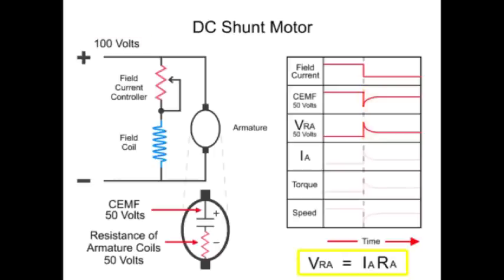Because the armature resistance, RA, is constant, as VRA changes the armature current, IA changes to compensate for the increase or decrease in the voltage drop.